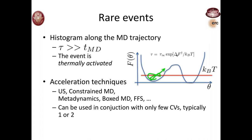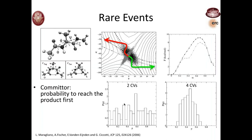There is an array of acceleration techniques one might want to use: umbrella sampling, constrained molecular dynamics or the Blue Moon ensemble, metadynamics, boxed molecular dynamics, forward flux sampling, and many others. One characteristic of these techniques is that they are typically able to target a limited number of collective variables — one, two, or a few of them — and sometimes this is insufficient.